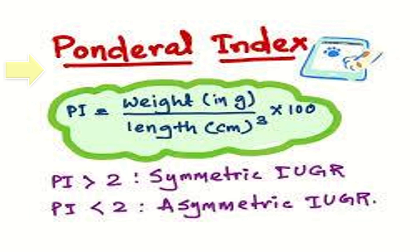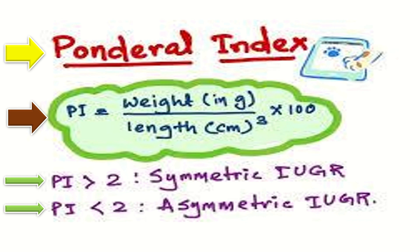The ponderal index formula is shown here. When the ponderal index is more than 2, it indicates symmetrical IUGR. When it is less than 2, it indicates asymmetrical IUGR.